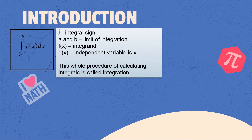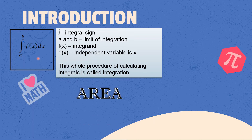Integration — let's get to know the integral. First, this is the integral sign. A and B are the limits of integration: A is the lower limit and B is the upper limit. Fx is the integrand and x simply represents the independent variable. This whole procedure of calculating an integral is called integration, and the process involves finding the area under the curve and volume.